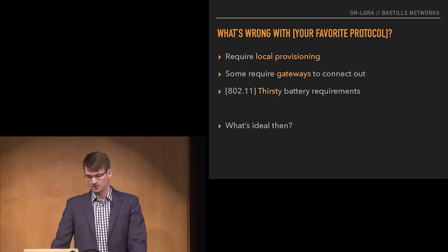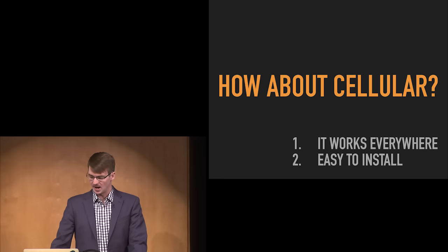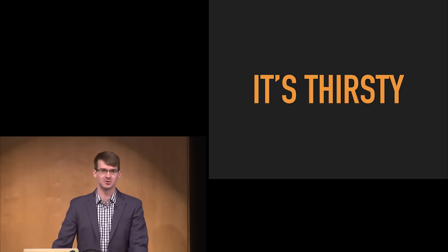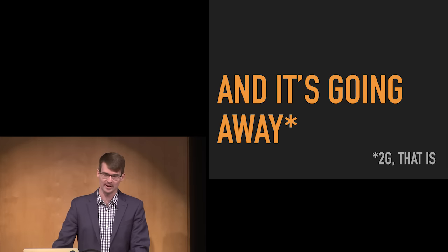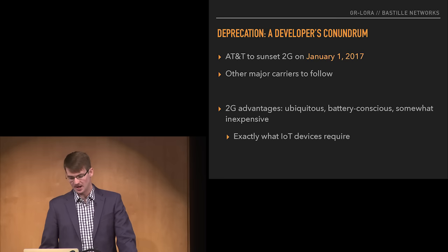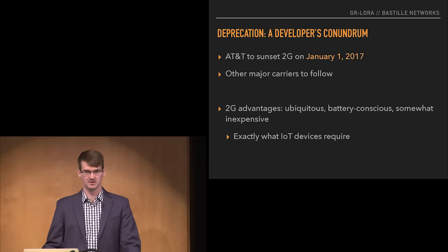What about cellular? It works everywhere, you don't need any local provisioning to get it to work on a site, and it's easy to install. Unfortunately, it is power intensive, and in the case of the most popular cellular variant, it's going away. I'm talking about 2G, GPRS, and edge service. AT&T is slated to sunset these networks at the end of this year — January 1, 2017 they're turning those towers off. So that's like four months from now.